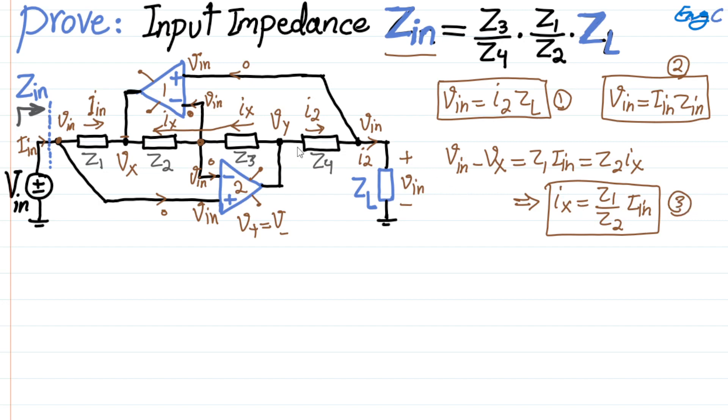For the same reason, you can see that from this node, Vy, we have a drop across Z4, we get to Vin, or if we go left side, we have a drop across Z3 and we get to Vin again, so the voltage drop across Z3 and Z4 should be the same. So I can say Vy minus Vin, voltage drop across these two resistors, should be equal to either Ix times Z3 or either I2 times Z4. So using these two,